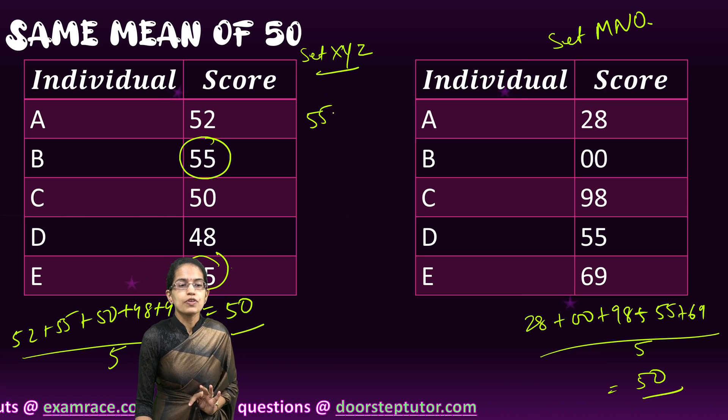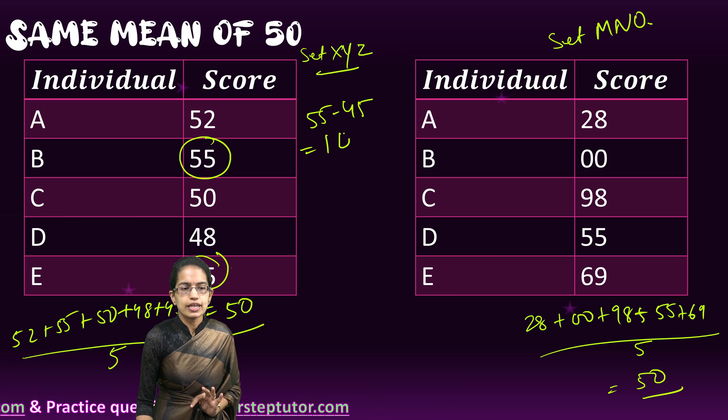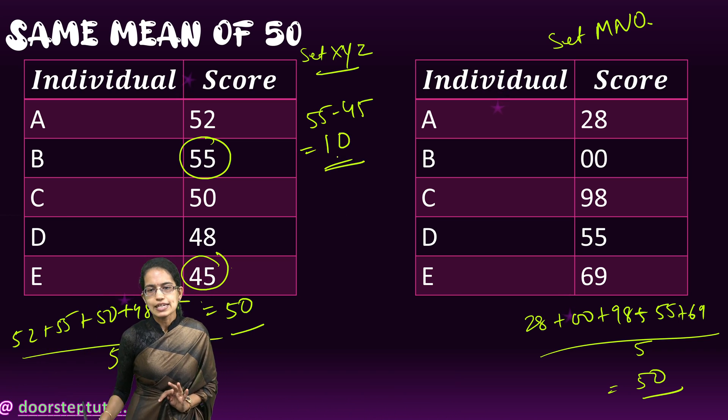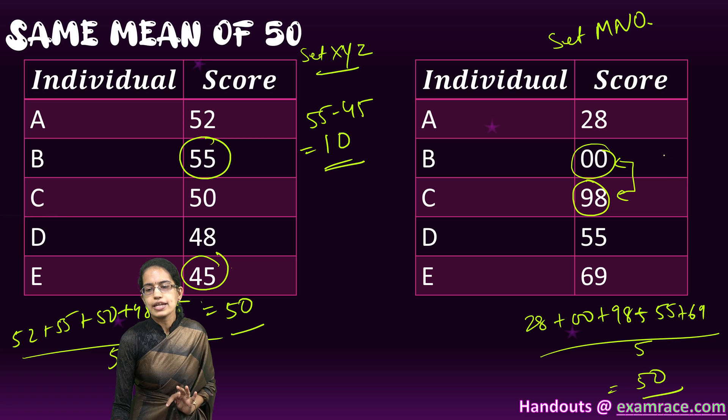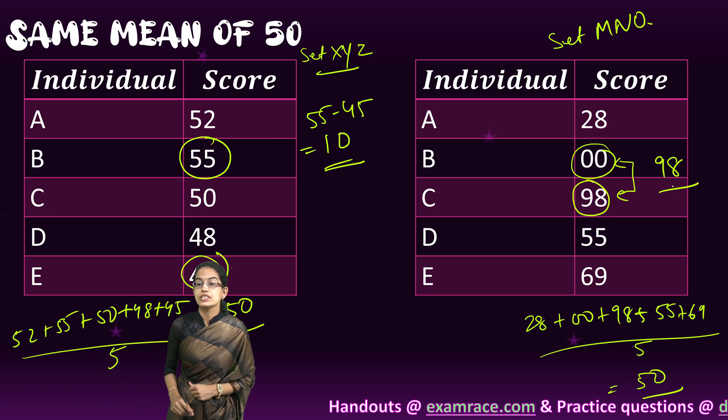Let's move to the next set MNO. Here my lowest value is 0 and highest is 98. So what is my range? My range here is 98 minus 0 which gives 98.